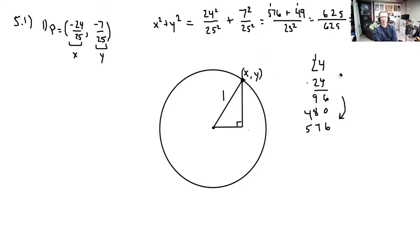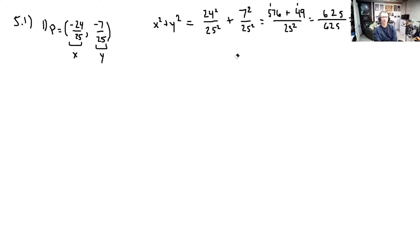So we've confirmed that this squared plus this squared is 1, which means it's on the unit circle. And we're good. So that's that question.